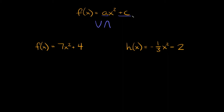And then this plus c part is just your y-intercept — wherever the parabola crosses the y-axis. Whenever your function is specifically in this form, ax squared plus c, this plus c part also tells you where the vertex is. So the vertex and the y-intercept are the exact same spot.